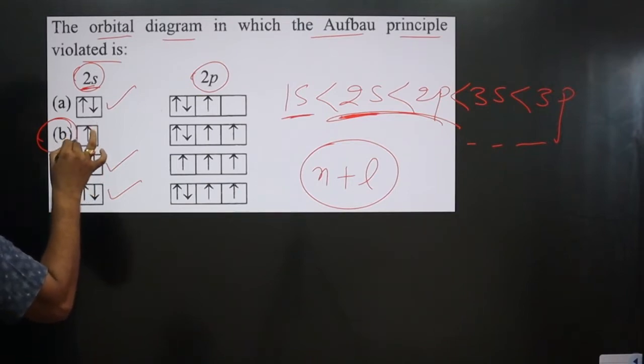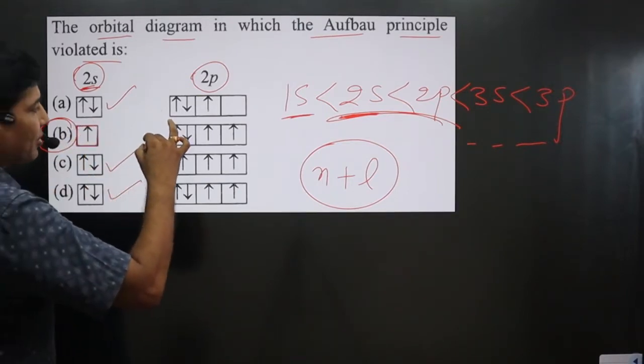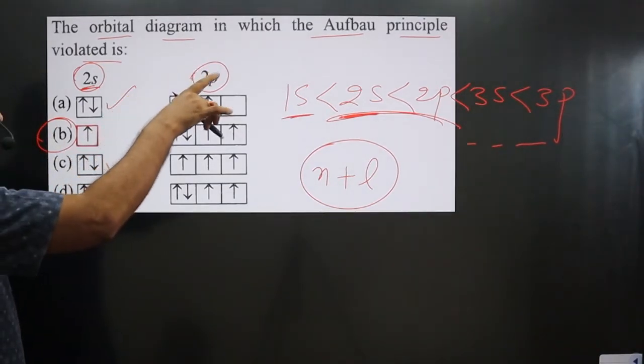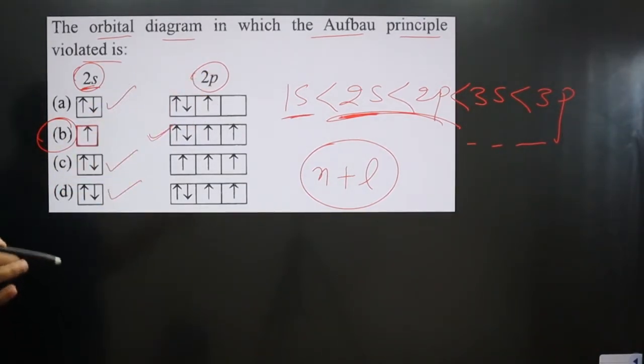Before completely filling this S orbital, you can see, they have started filling P orbital, which is not according to Aufbau principle. It violates Aufbau principle.